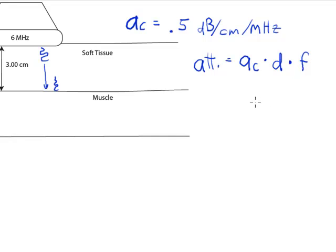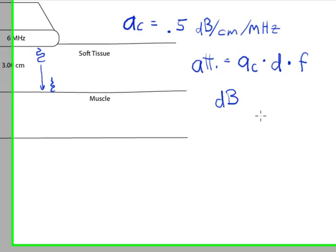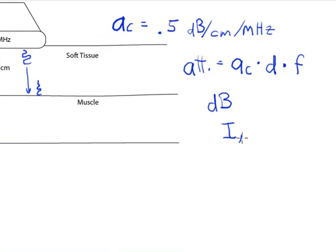And then this attenuation will be calculated in decibels and it will tell me the amount of decibels of attenuation. So if I have some initial intensity, I can use that in the decibel formula to figure out the final intensity. By putting, in this case, since it's attenuation, it would be a negative.